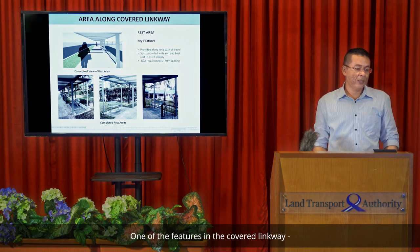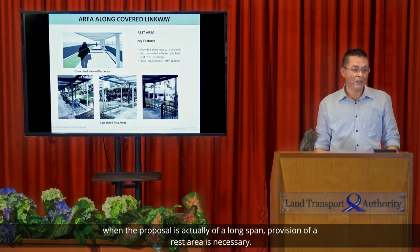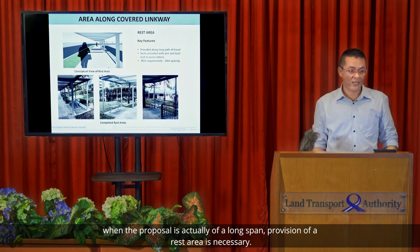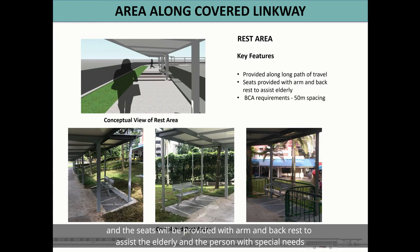One of the features of covered Linkway — when the proposal is on a long-span route — is that a rest area is necessary. This will be provided along longer paths of travel. Seats will be provided with arm and back rest to assist the elderly and persons with special needs. This rest area is part of BCA requirements, which require placement at every 50 metres.